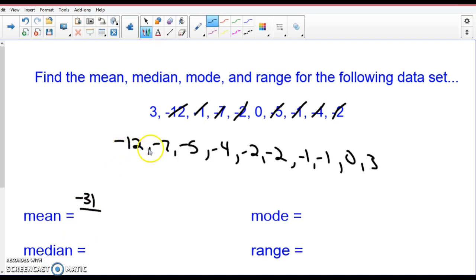And if I count them - 1, 2, 3, 4, 5, 6, 7, 8, 9, 10 - I'm dividing by 10, which is negative 3.1. Look what work I showed you. That shows me that you understand what you're doing. And it's labeled mean.